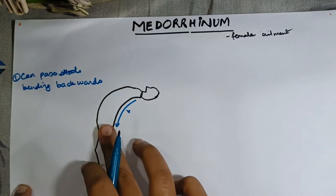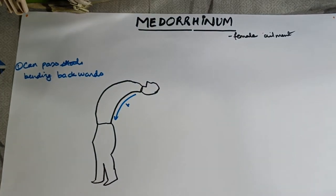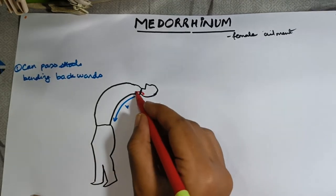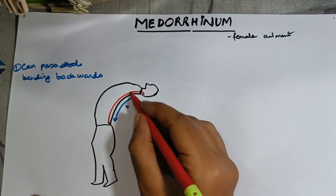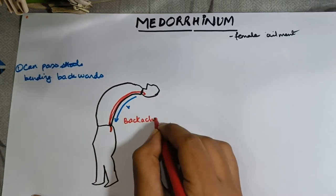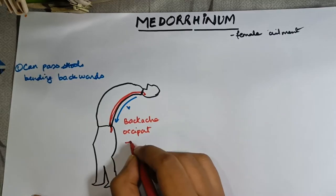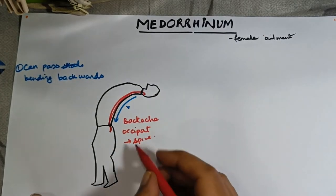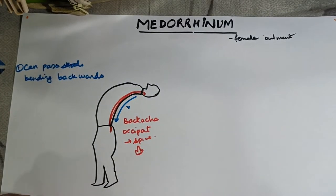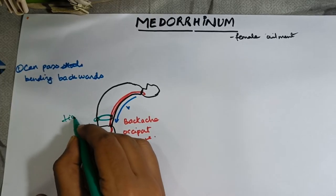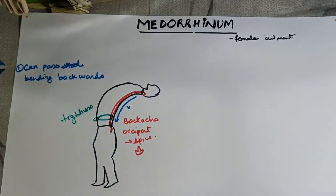Since we are at the back level, there is severe backache from occiput to the whole length of the spine. Severe backache from occiput to whole spine, with stiffness and burning — which is why I have taken the red pen. There is also a sense of tightness or constriction all over, which I would show here as a back symptom.